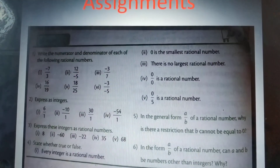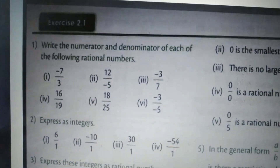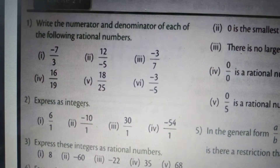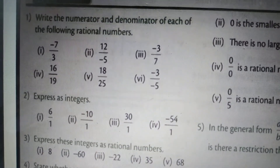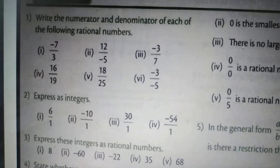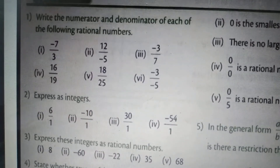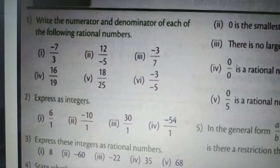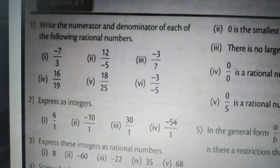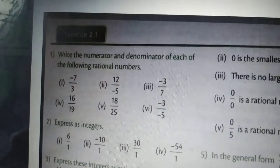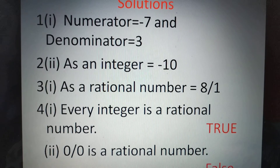Dear students, you have some assignments — Exercise 2.1. I am going to help you solve this exercise. Question 1, first part: write the numerator and denominator of the rational number -7/3. As you know, -7 is the numerator and 3 is the denominator. So the answer: numerator is -7 and denominator is 3.